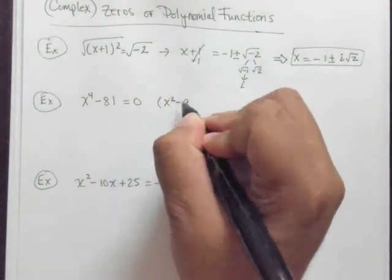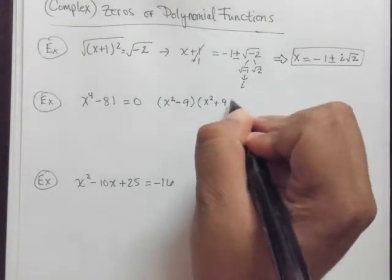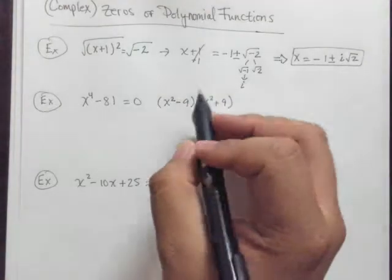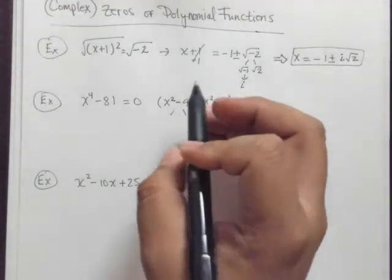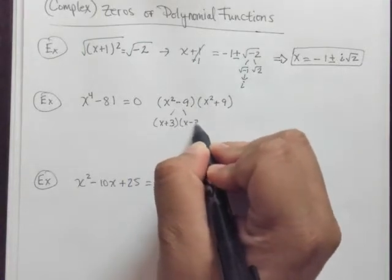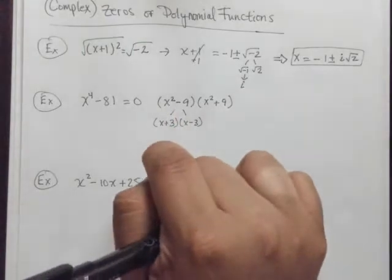So think about what the square root of x to the fourth is, and that's x squared, and think about the square root of 81, and that is 9. So you're going to have x squared minus 9, and x squared plus 9. Well, this right here also happens to be a difference of two squares.